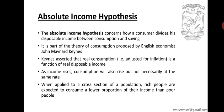When applied to a cross-section of a population, rich people are expected to consume a lower portion of their income than poor people. The rich will be investing or saving the rest of their income, whereas when it comes to the poor, a major part of their income will be going for consumption.